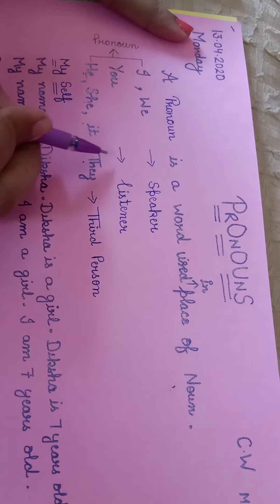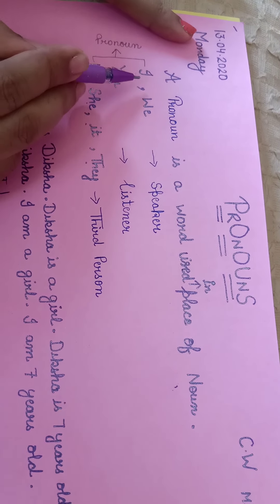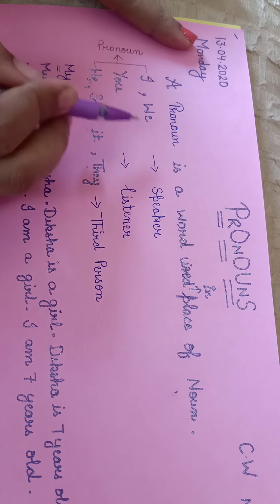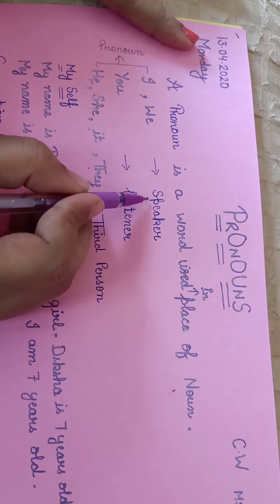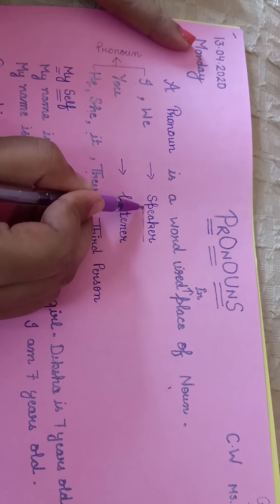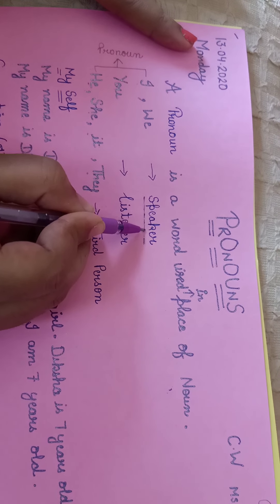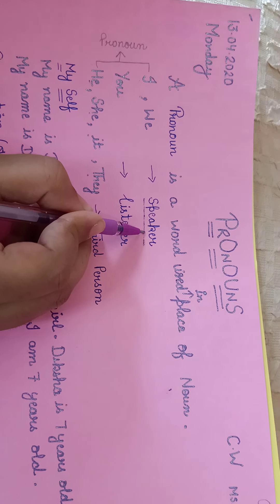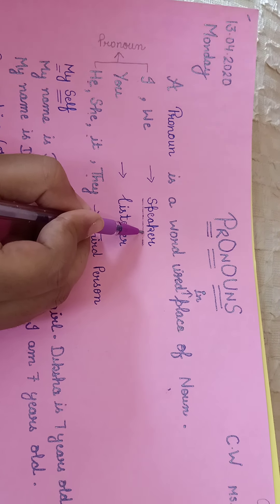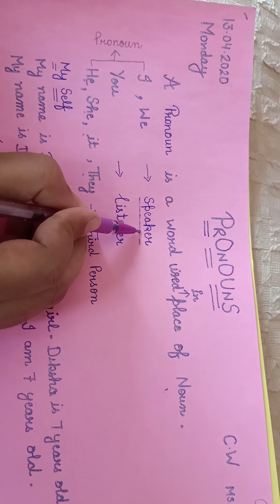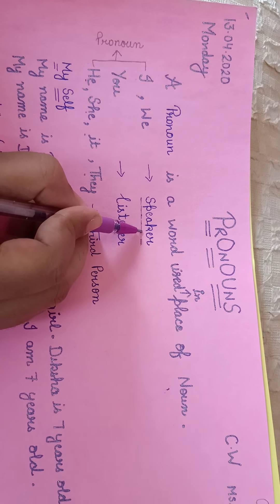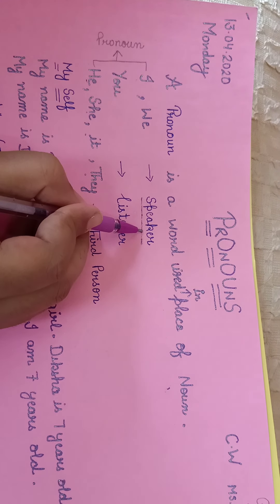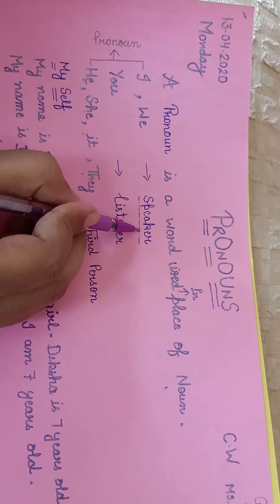These all are the pronouns, but we have divided pronouns into three categories. First category of pronoun is speaker — who is speaking? That is the speaker. Here, who is the speaker? Me. I am speaking. So what word do I use? I and we.